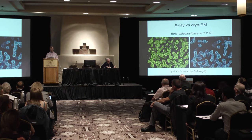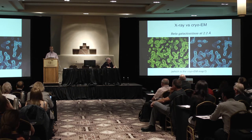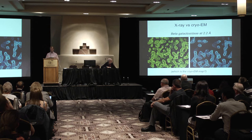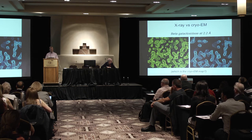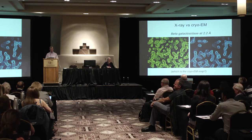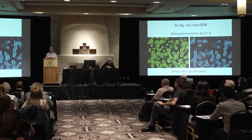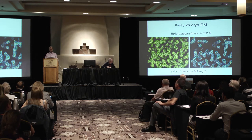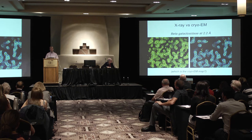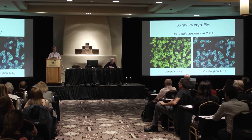Here's a quiz: which one is the cryoEM map? Look at these two maps and try to think which one is the cryoEM map. The hint is that these are the same structure — beta-galactosidase. I'll give you an extra clue by showing you the interpretation of these two maps. The one on your right is the cryoEM map; the one on the left is the X-ray map.